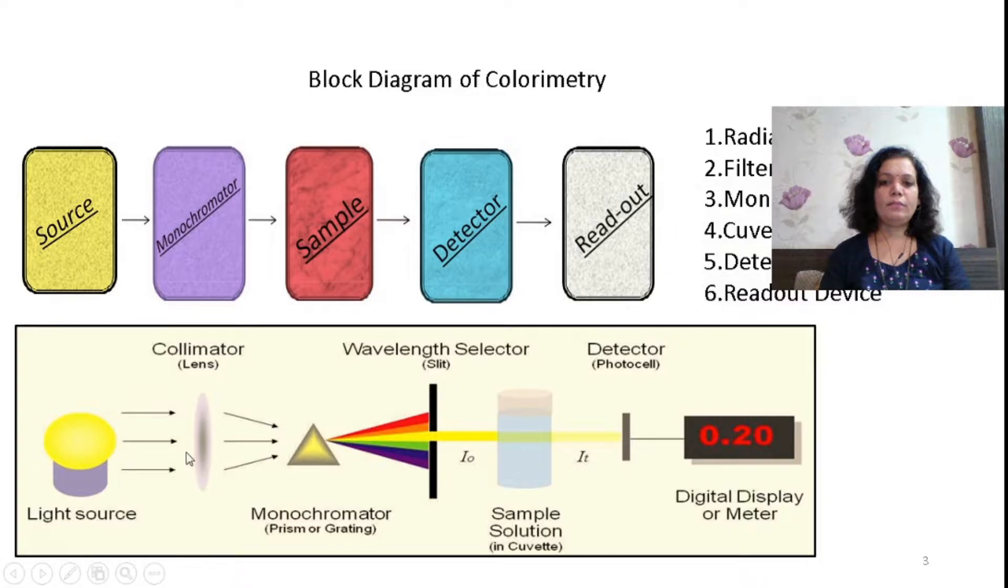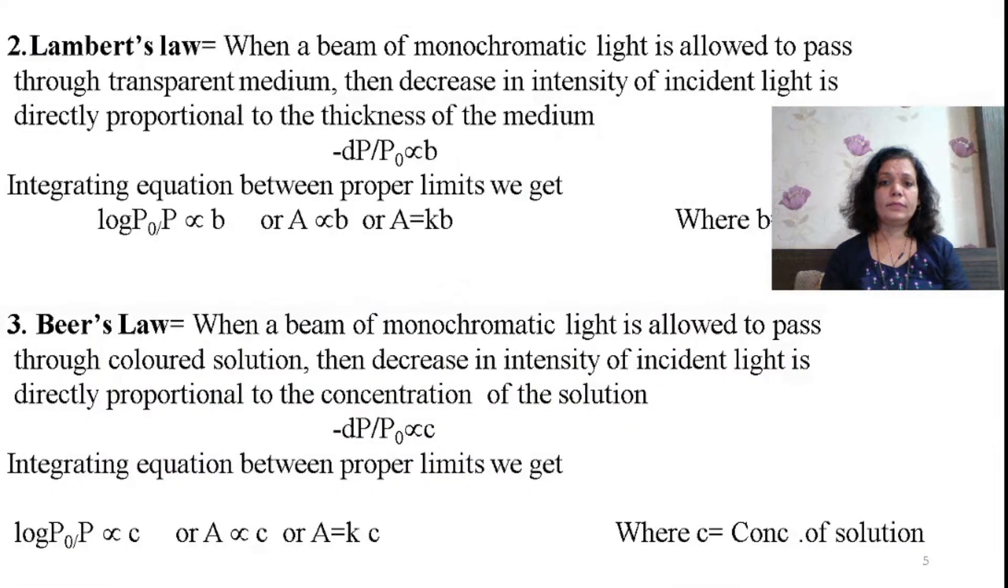This is again the same where you are getting the radiant source filter, monochromator, cuvette, detector in a single beam readout device. This whole instrument is based on Beer's law. As we are keeping path length constant in an instrument, we are following this principle.